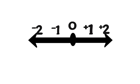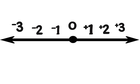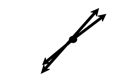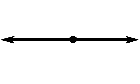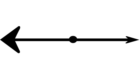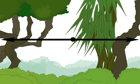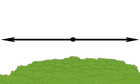A number line shows numbers in order. A number line can go in any direction, but we most often use a horizontal one. Notice that a number line has an arrow on each end. That means the numbers go on and on, all the way to infinity, in both directions.